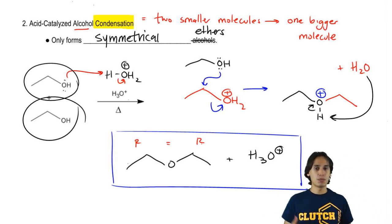Sometimes you want that. But for example, if you wanted an asymmetrical ether, maybe Williamson ether synthesis would be a better choice because that one it doesn't matter. You can just add R groups as you want.